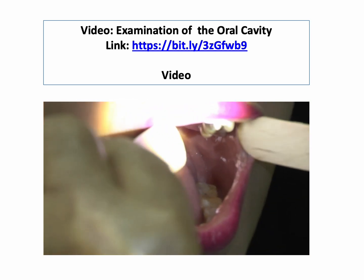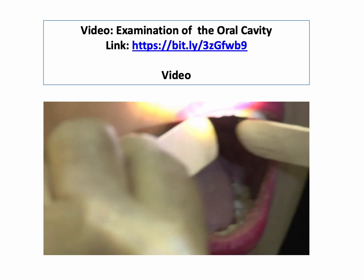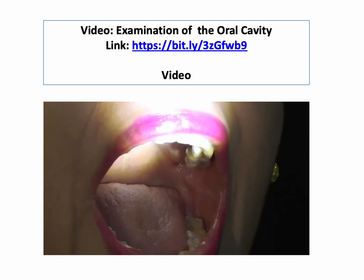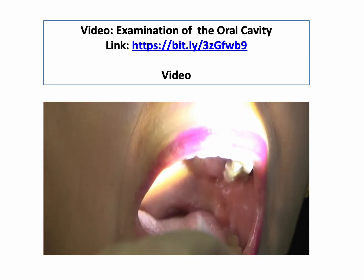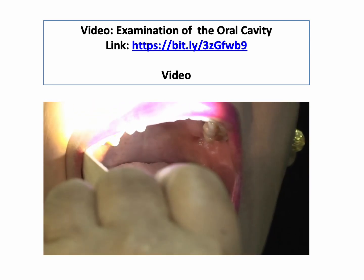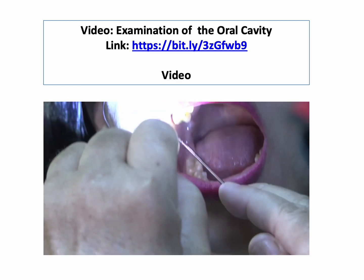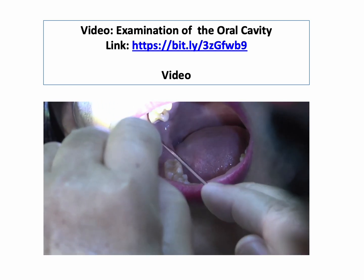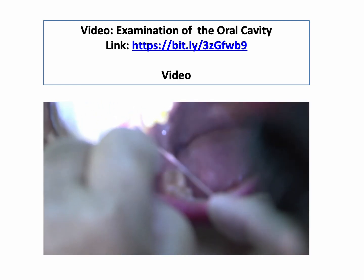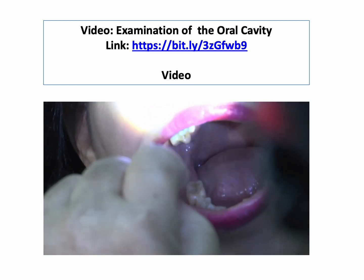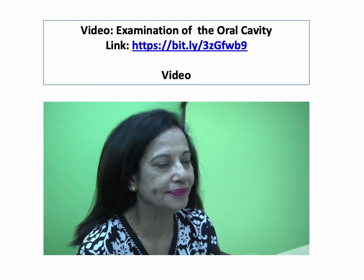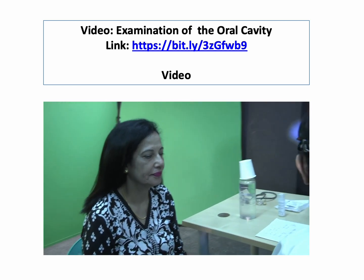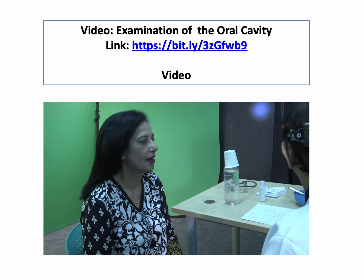Can you look up? We look at the mucosa — generally it is pink. The opening of the parotid gland duct is located here at the cheek, against the upper second molar. For palpation, I have to put on gloves.